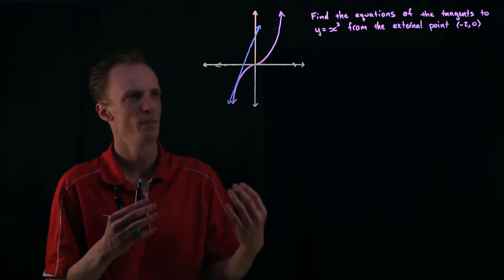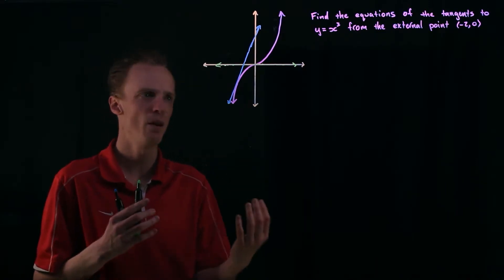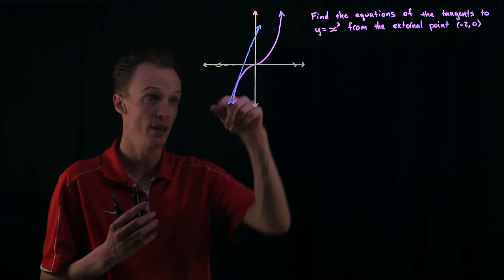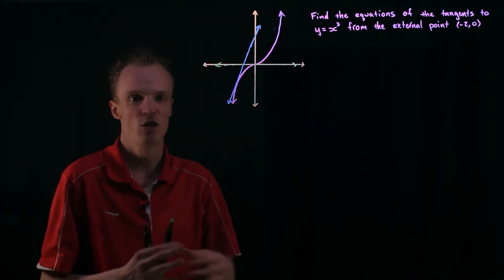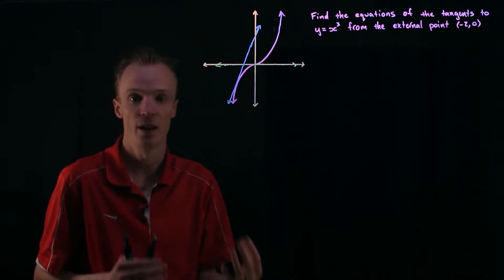But let's think about this algebraically. How might we actually find these two equations for these lines here that I've just drawn in just using our algebraic understanding of things.